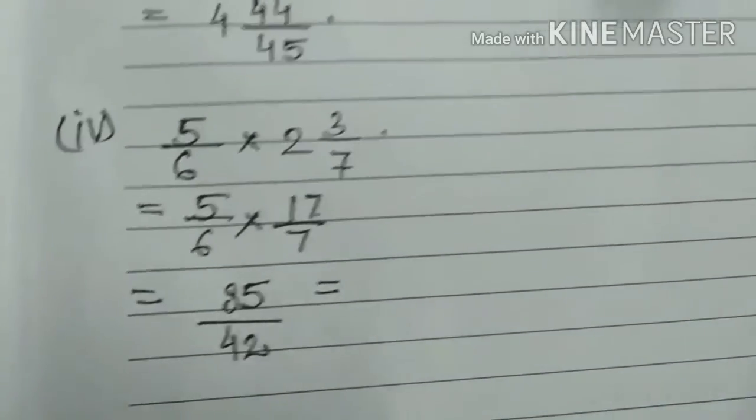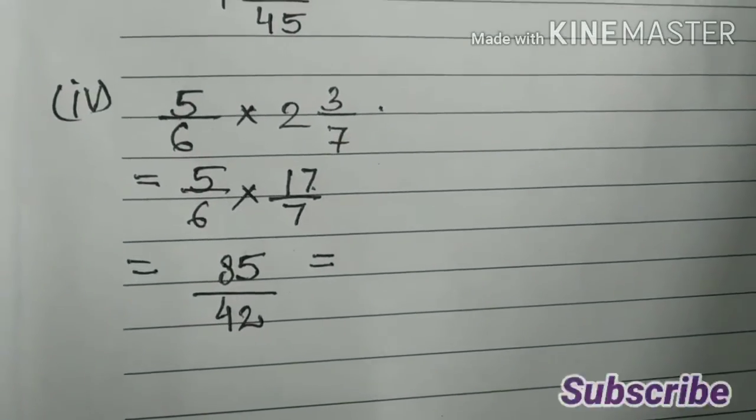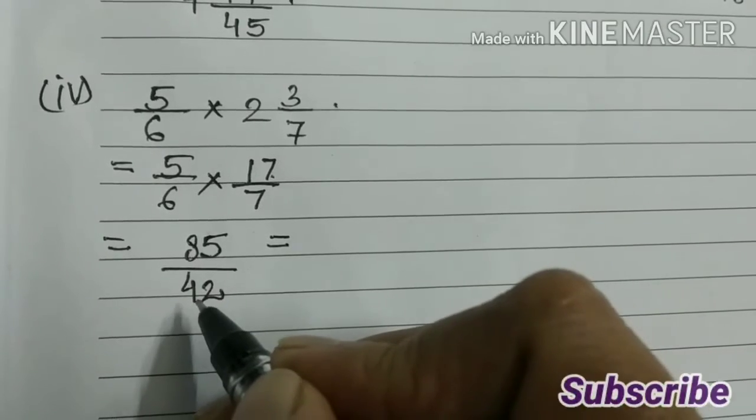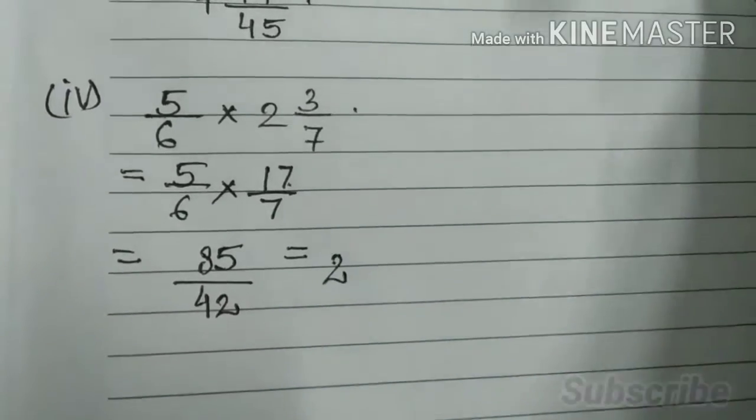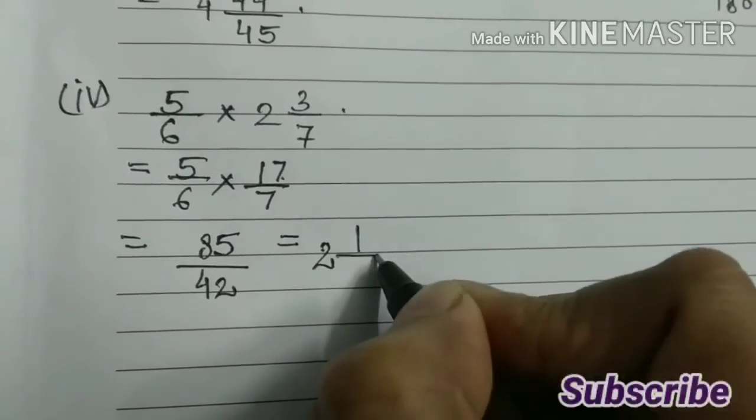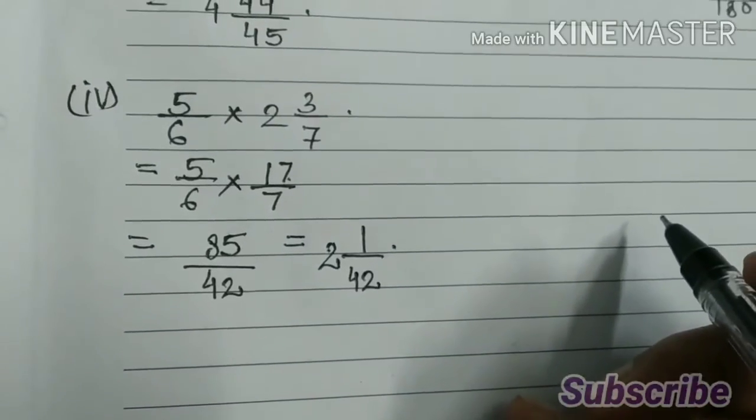That is equal to, let us divide 85 by 42. So 42 into 2, 84. So 2, remainder is 1, 1 by 42. This is the mixed fraction.